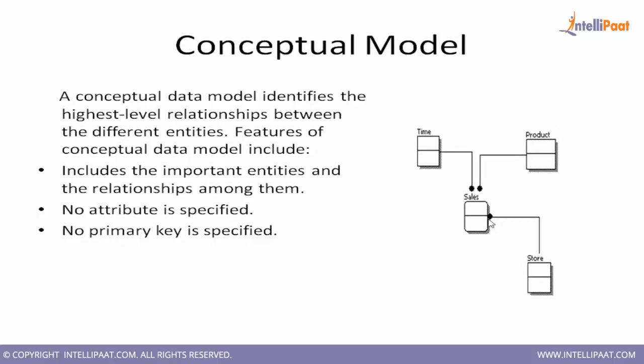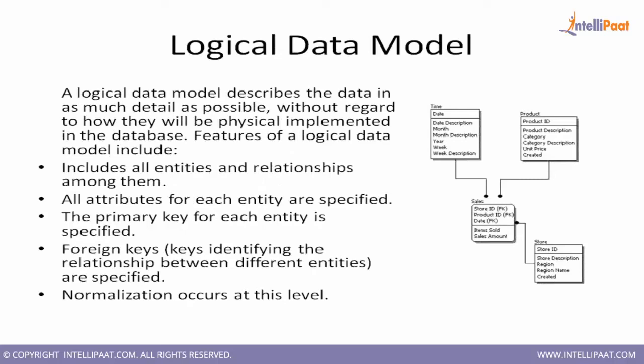In the conceptual model, we define what entities should exist and what the relationships between them should be. For example, every product will have sale information, so there is a relationship between product and sales. To identify location, there is a relationship between store and sales, and to identify the date of sales, there is a relationship from time to sales. Once entities and relationships are defined, we move to the logical data model.